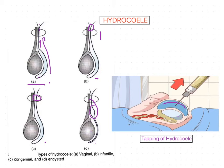Hydrocele can be studied under scrotum because tunica vaginalis is present in the scrotum itself. We have already studied sebaceous cysts on the scrotum. Other clinical anatomy related to the testis includes: unilateral absence of testis, called monorchism, where only one testis is present. Bilateral absence of testis is called anorchism, which is a type of genetic disease.